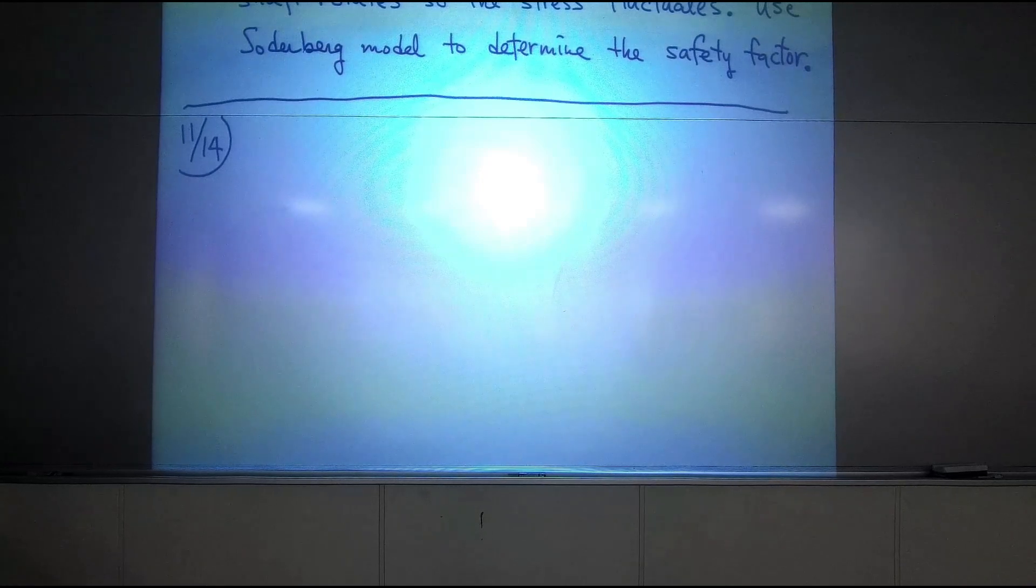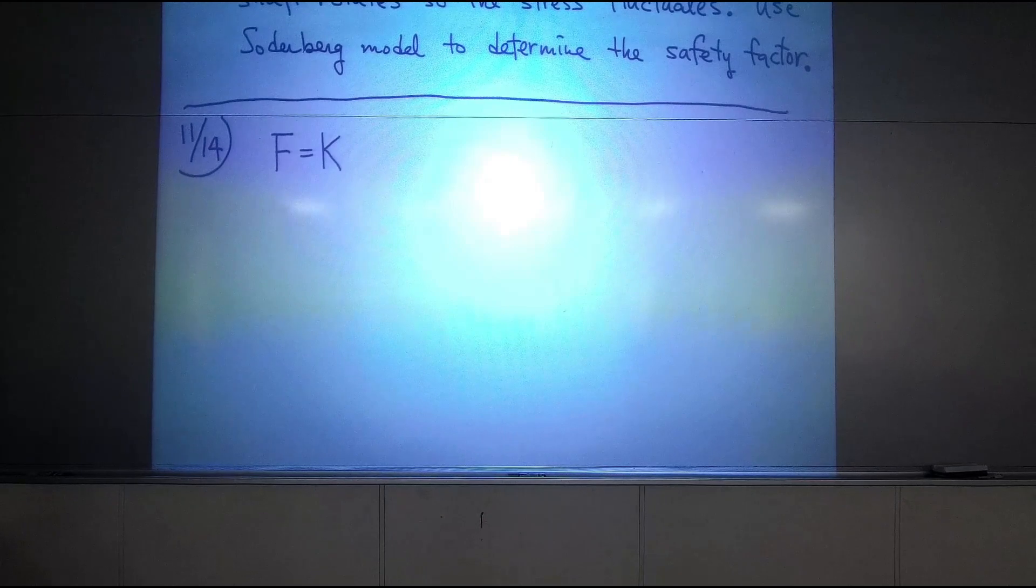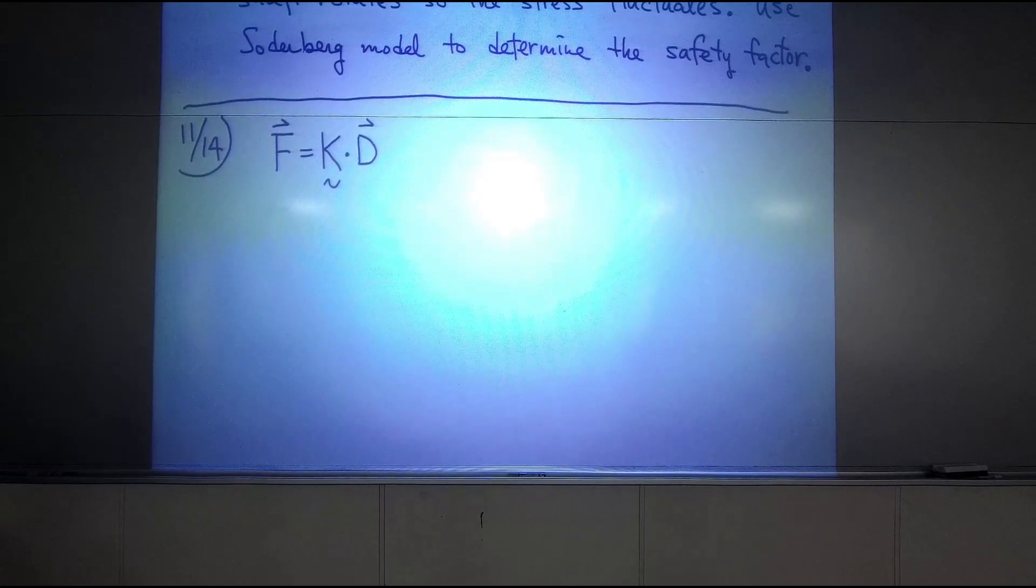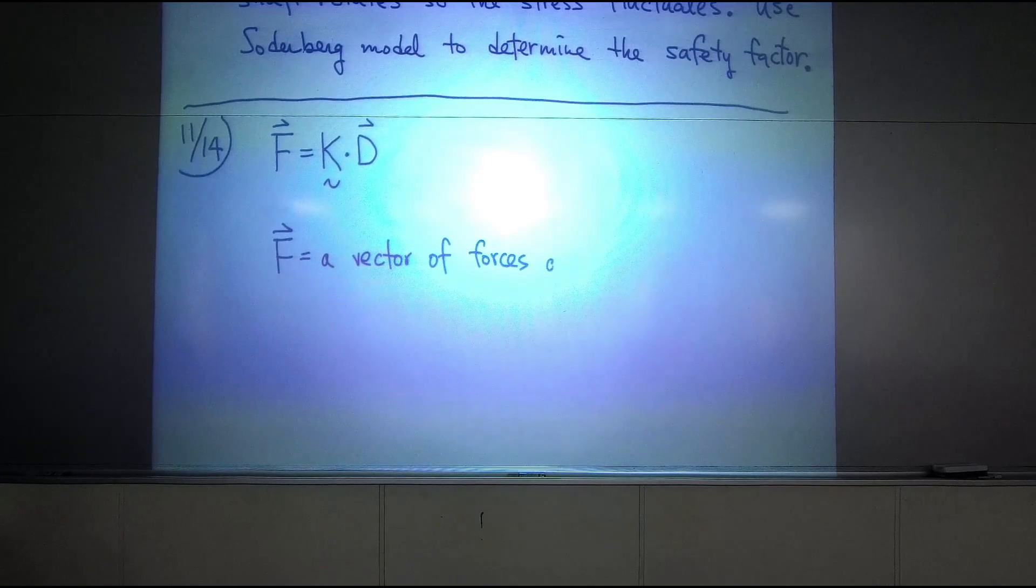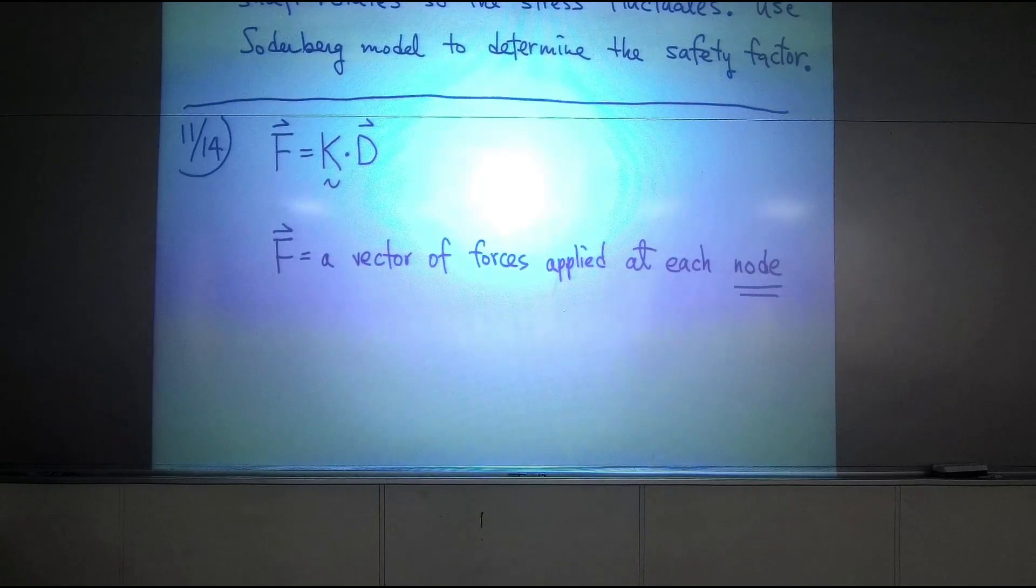So there are several things that you need to know about. There is one equation called F equals to K times D. F is a vector, K is a matrix, D is a vector. So what are those? F is a vector of forces applied at each node. So right here you have a new terminology, node. I will tell you what is a node.